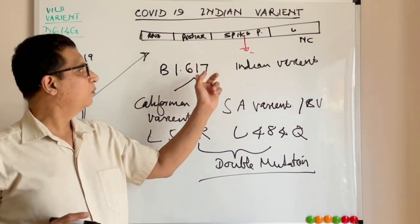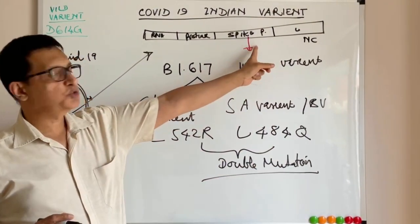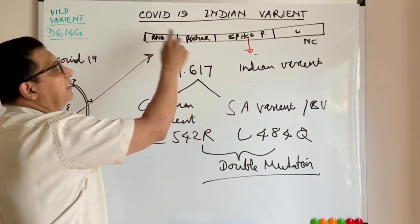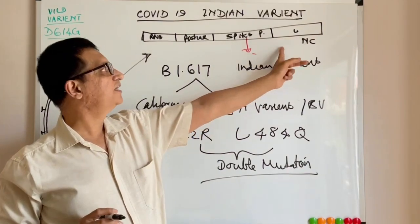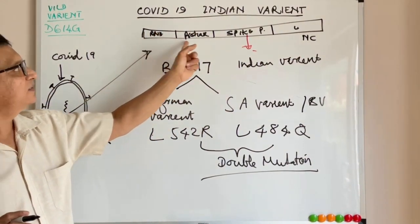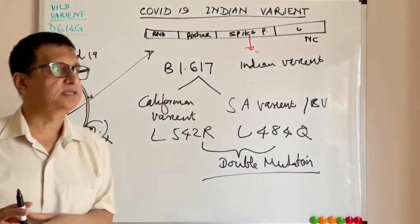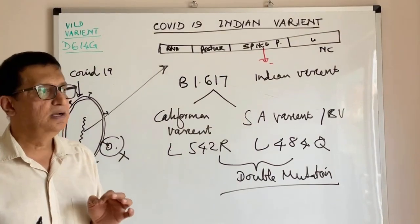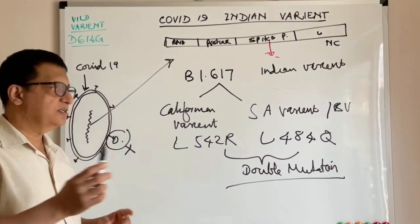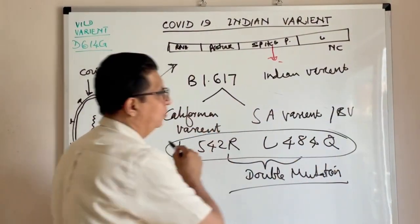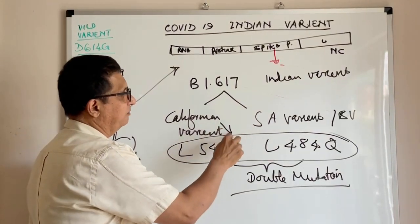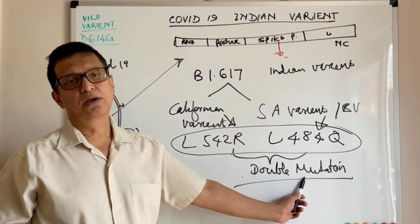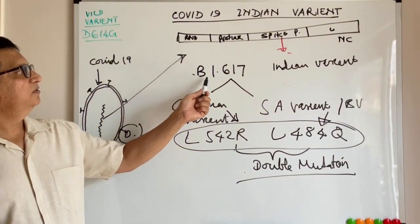These two mutations in the B1617 spike protein gene are coded as the double mutant variant. But in reality there are about 13 to 15 mutations in the whole genome but they are not much concerned. They are not much related to the spread of the disease and its severity and infectivity. That is why scientists are concerned about only these two variants and named it as double mutation variant, COVID-19 Indian version B1617.